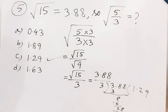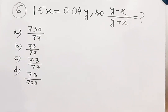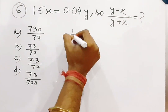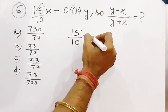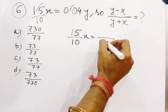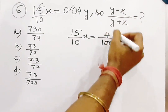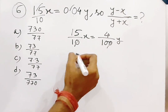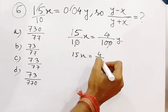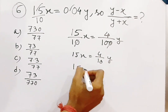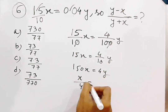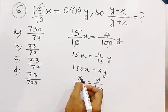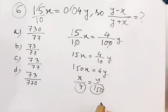Now the question is 1.5x = 0.04y, find (y minus x) by (y plus x) equal to question mark. So 1.5 means 15 by 10, and 0.04 means 4 by 100. After cancelling zeros, 15x = 4y/10, so cross multiplication gives 150x = 4y. Therefore x by 4 equals y by 150, meaning x equals 4 and y equals 150.